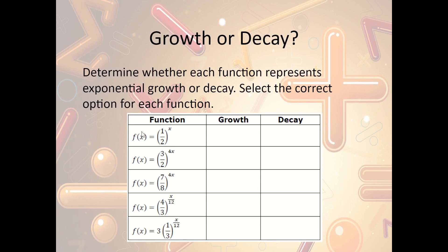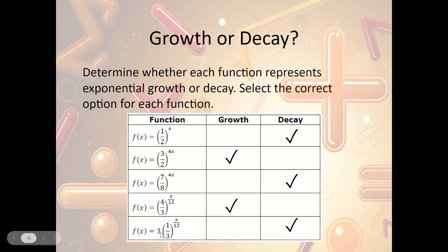So how can we tell growth from decay? If the base is bigger than 1, it's growth; if it's smaller than 1, it's decay. Examples: f(x) = (½)ˣ — ½ is less than 1, so that's decay. f(x) = (3/2)ˣ — that's bigger than 1, so that's growth. f(x) = (7/8)ˣ — smaller than 1, so that's decay. f(x) = (4/3)ˣ — bigger than 1, so that's growth. f(x) = (1/3)ˣ — less than 1, so that's decay. Notice it doesn't matter what the coefficient is or what the exponents are — this base value is the only number that matters.